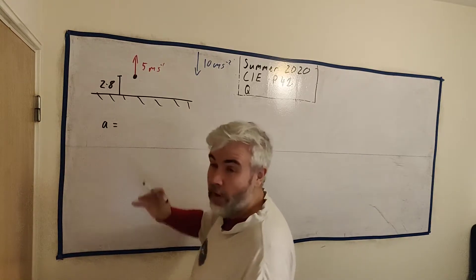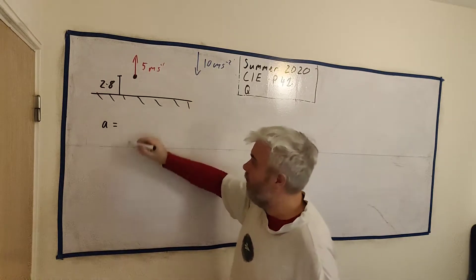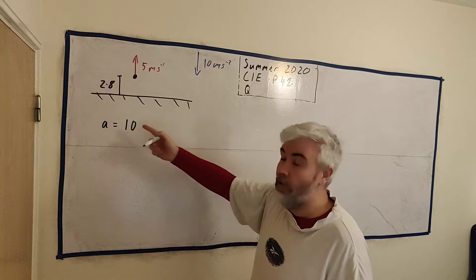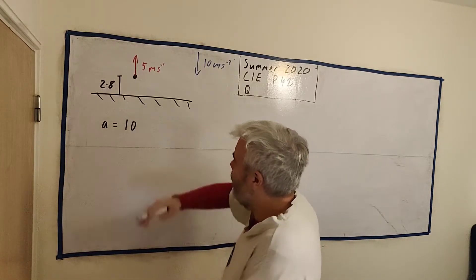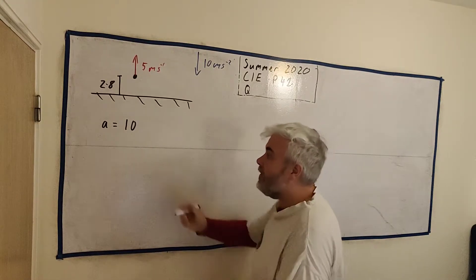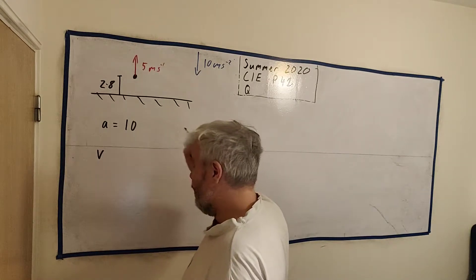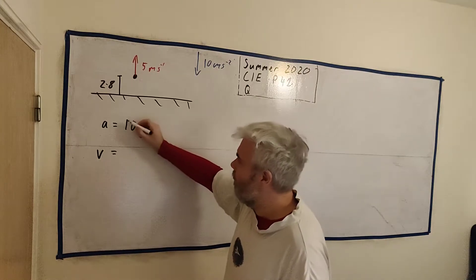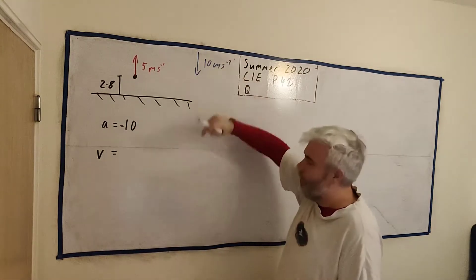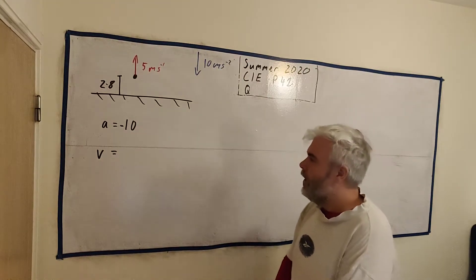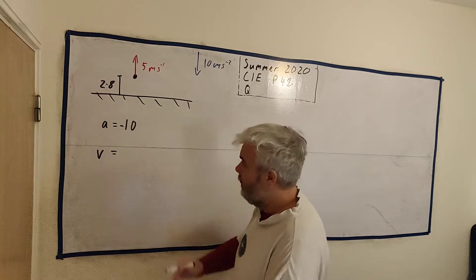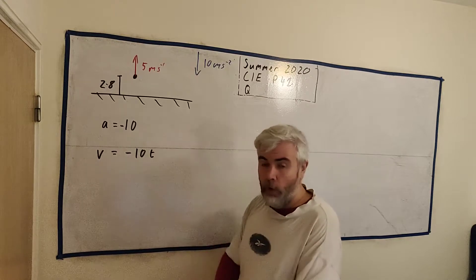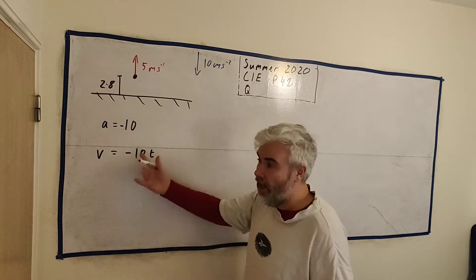I start off with the acceleration first, and the acceleration is a nice constant. When you move on from this level sometimes the acceleration might not be constant, but the acceleration is equal to minus 10. To find the velocity from acceleration we just integrate.